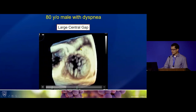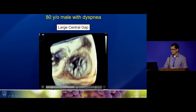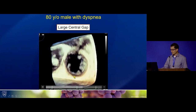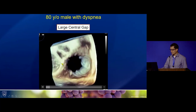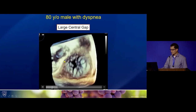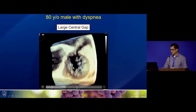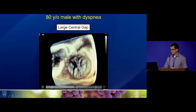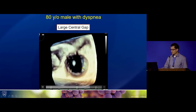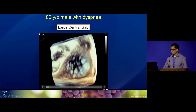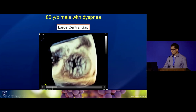3D imaging shows the very large septolateral gap and this broad jet of TR. For reference, this is the tricuspid valve from the right atrial perspective — the atrial septum, the septal leaflet, the big anterior leaflet, and the posterior leaflet.